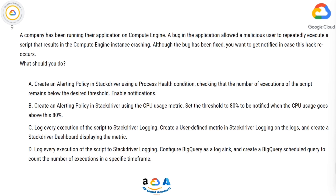A. Create an alerting policy in Stackdriver using a process health condition, checking that the number of executions of the script remains below the desired threshold. Enable notifications. B. Create an alerting policy in Stackdriver using the CPU usage metric, set the threshold to 80% to be notified when CPU usage goes above 80%. C. Log every execution of the script to Stackdriver logging, create a user-defined metric in Stackdriver logging on the logs, and create a Stackdriver dashboard displaying the metric. D. Log every execution of the script to Stackdriver logging, configure BigQuery as a log sink, and create a BigQuery scheduled query to count the number of executions in a specific timeframe.